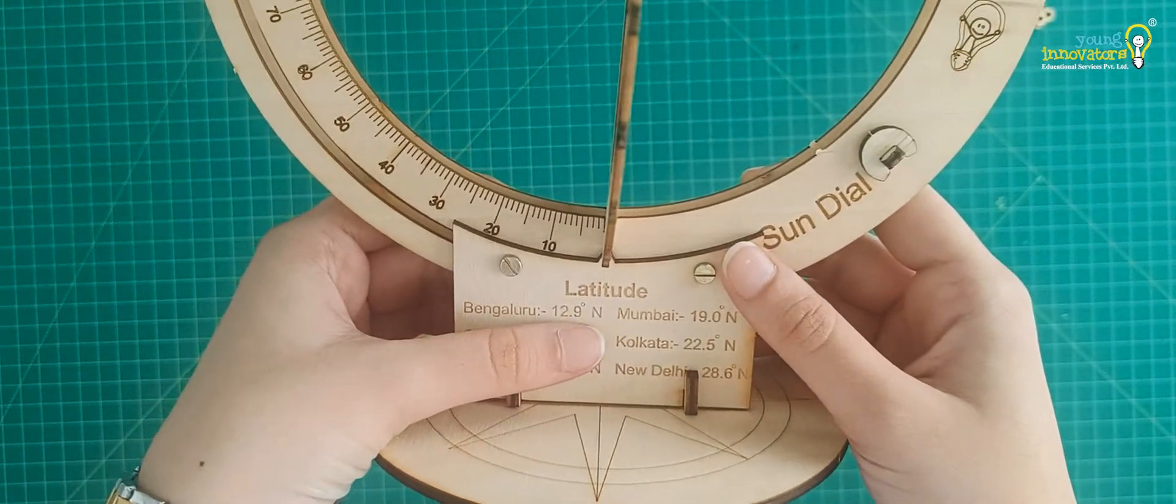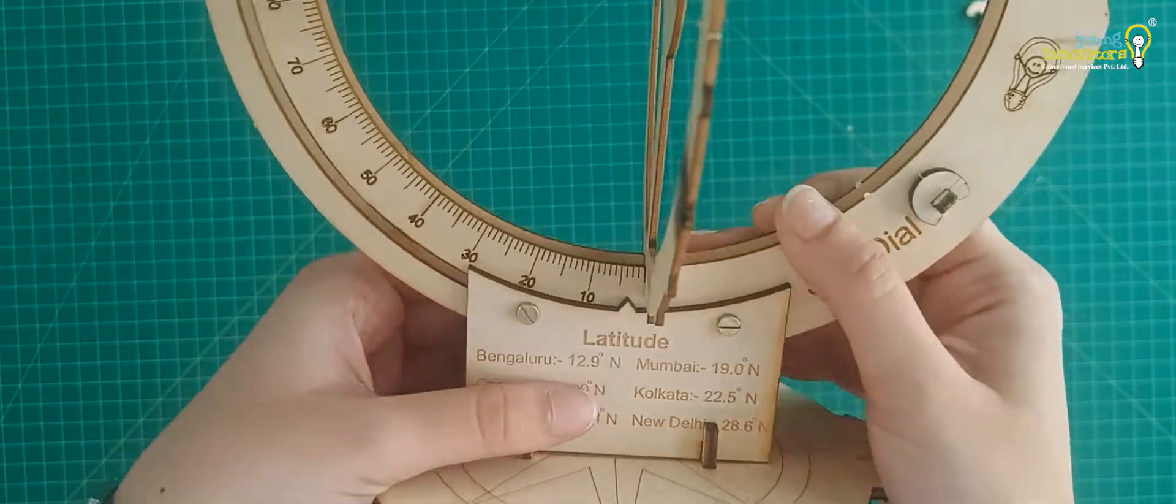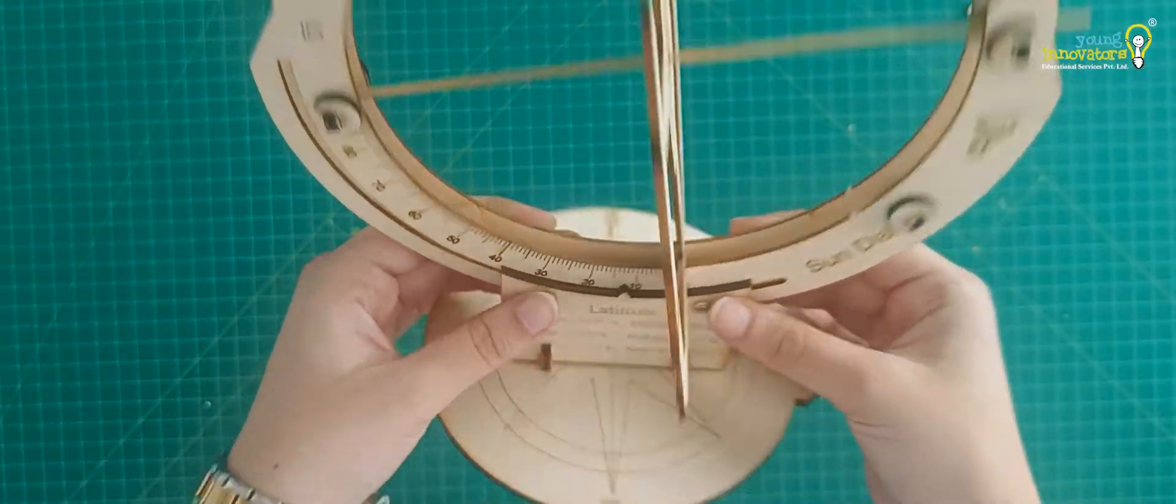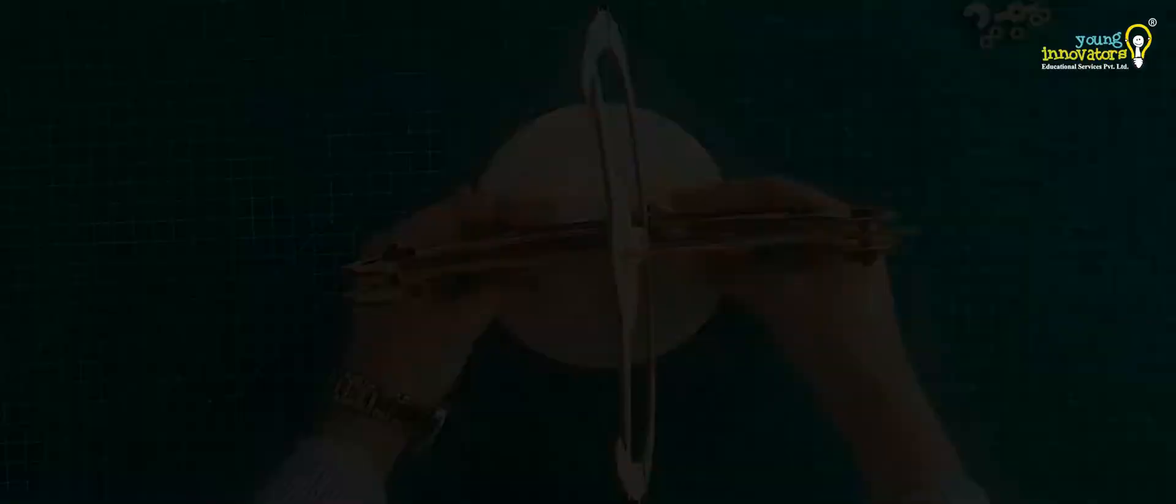Gently tilt the arm scale to the latitude of your current city and keep the setup facing the true north direction. You have now made your own sundial.